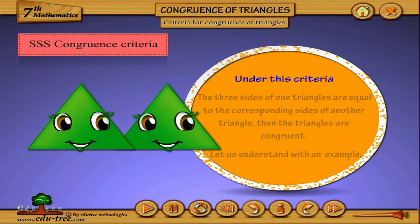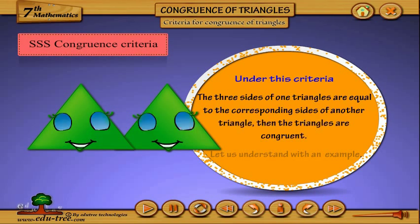Under this criteria, the three sides of one triangle are equal to the corresponding sides of another triangle, then the triangles are congruent.